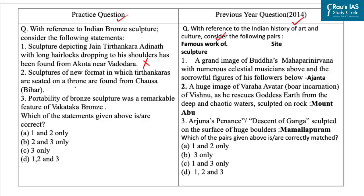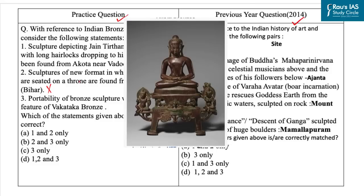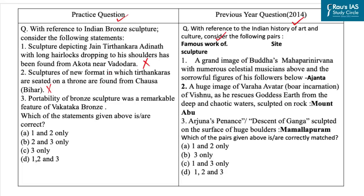The second statement is: sculptures of a new format in which Tirthankaras are seated on a throne are found from Chausa, Bihar. This statement is also incorrect, because the horde of bronzes discovered at Akota near Vadodara established that bronze casting was practiced in Gujarat or western India between the 6th to 9th centuries CE. Most of the images represent Jain Tirthankaras like Mahavira, Parshavanath or Adinath, and a new format was invented in which the Tirthankaras are seated on a throne.